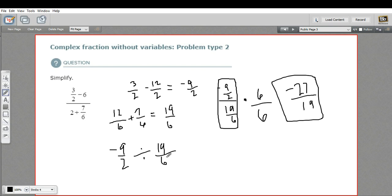This is the same as saying negative 9 halves divided by 19 sixths. And the way we do fraction division is we take this second fraction, we flip it upside down, and turn this into multiplication. So this is the same thing as negative 9 halves times 6 19ths.